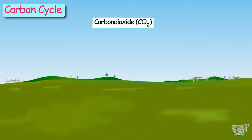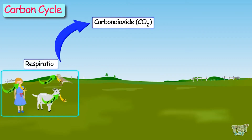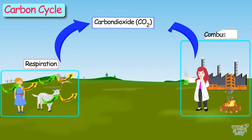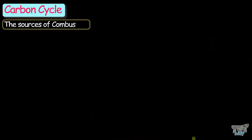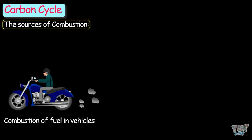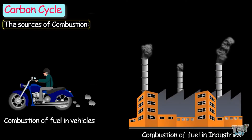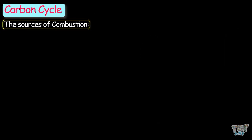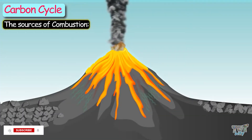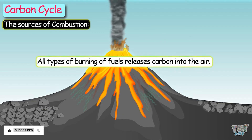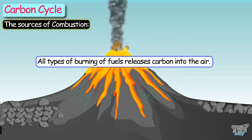Carbon dioxide enters the atmosphere through respiration, combustion, and decomposition. The sources of combustion can be combustion of fuel in vehicles, combustion of fuel in industries, forest fires, and volcanoes. So all types of burning of fuels releases carbon into the atmosphere.